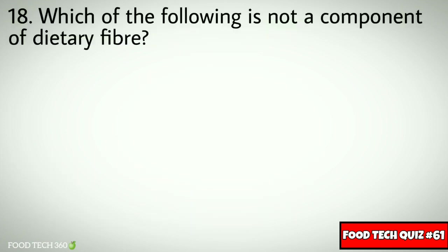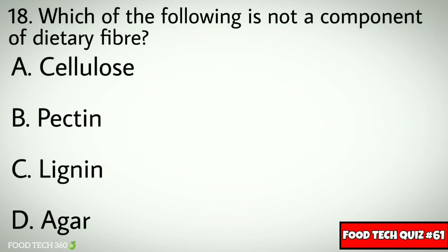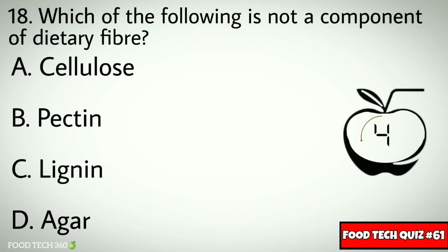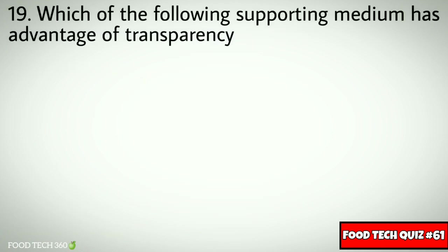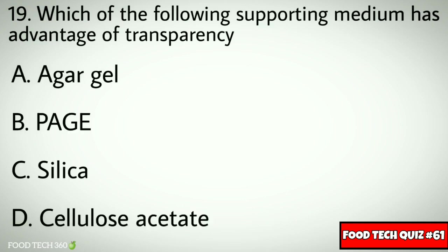Question number eighteen: which of the following is not a component of dietary fiber? Options: a) cellulose, b) pectin, c) lignin, d) agar. Correct answer: d) agar. Question number nineteen: which of the following supporting media has the advantage of transparency? Options: a) agar gel, b) PAGE, c) silica, d) cellulose acetate.